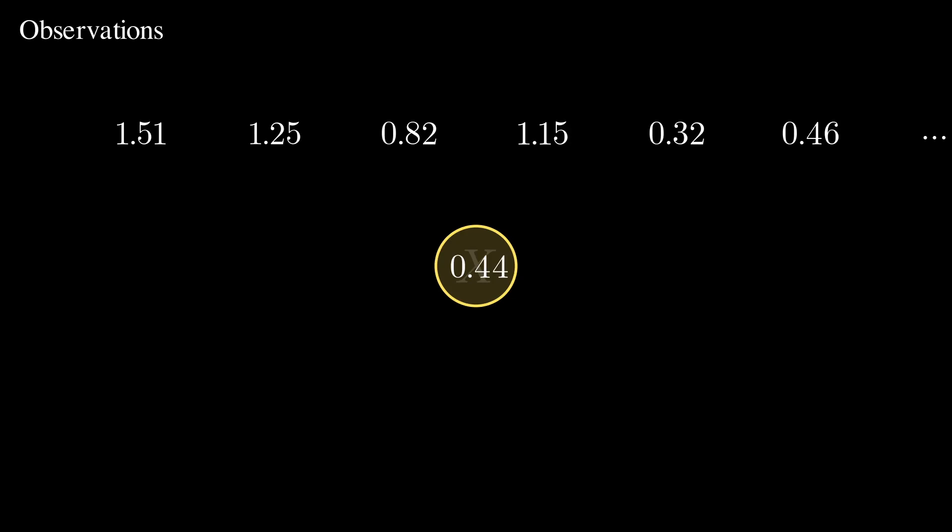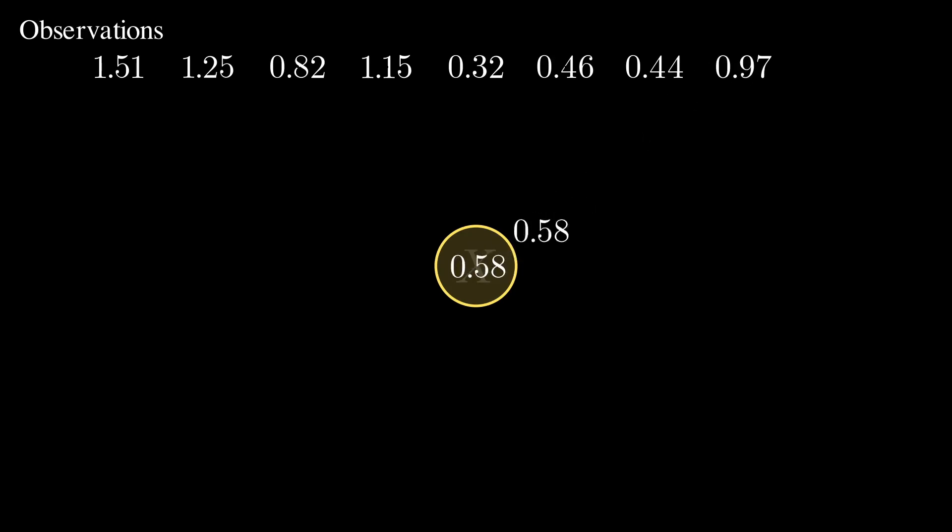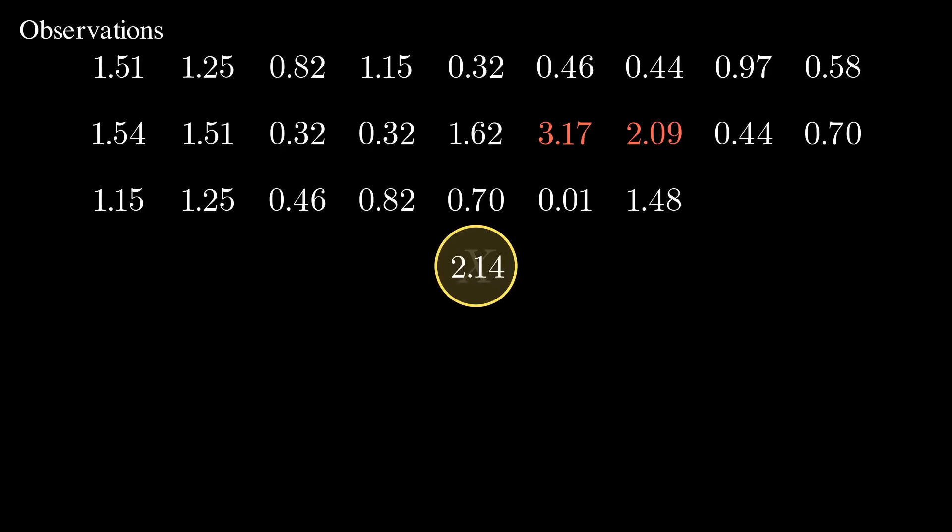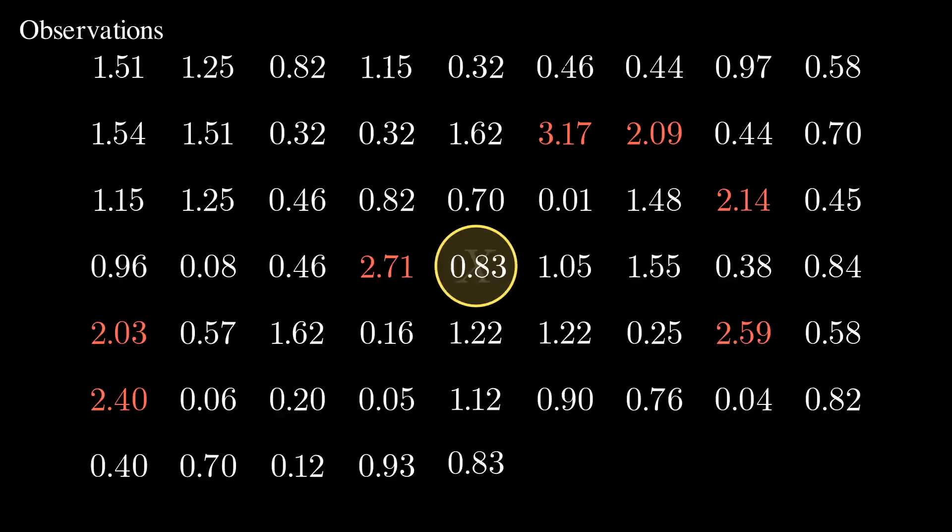If we let it generate more observations, we will see that sometimes, but not that often, it generates numbers greater than 2, sometimes greater than 3, and so on.